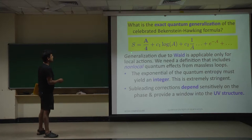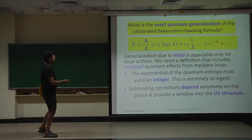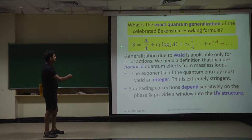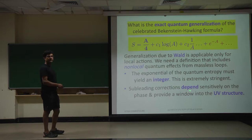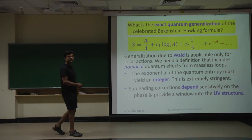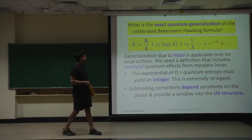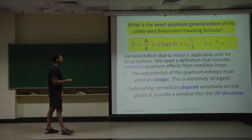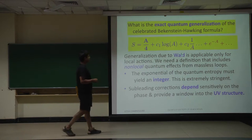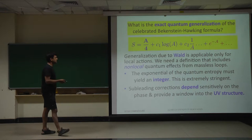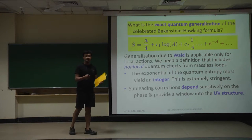A very important constraint is that all these apparently random infinite corrections, when you exponentiate the quantity, should add up to give an integer. That requirement is extremely stringent — it tells you that all these coefficients have to be precisely right. And it is because of that, that string theory is really something very rigid.